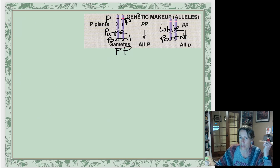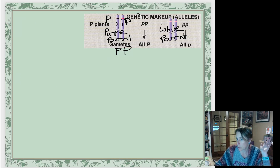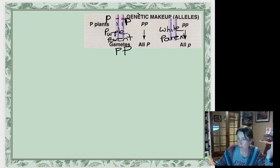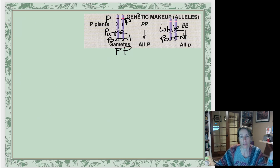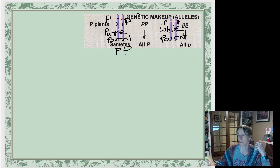We can use the same logic for the white parent. The white parent plant has had all its ancestors always white, constantly making the white protein. That white protein is made by the lowercase p version of the gene. So again, as a diploid organism, it has two chromosome ones and carries a lowercase p version of the P gene on both chromosomes.